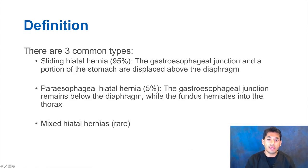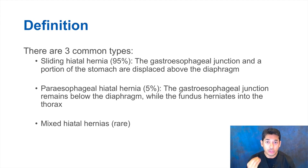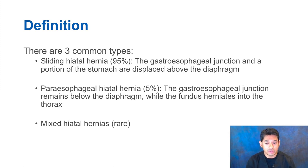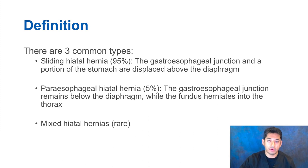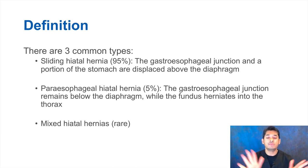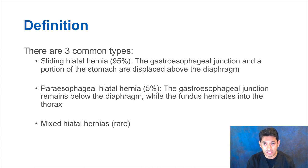There are three main types of hiatal hernias. The first is a sliding hiatal hernia, which is the vast majority of hiatal hernias. This is when the gastroesophageal junction and a portion of the stomach are displaced above the diaphragm — it goes up, it goes down. This is the vast majority of hernias that people will see and complain about.